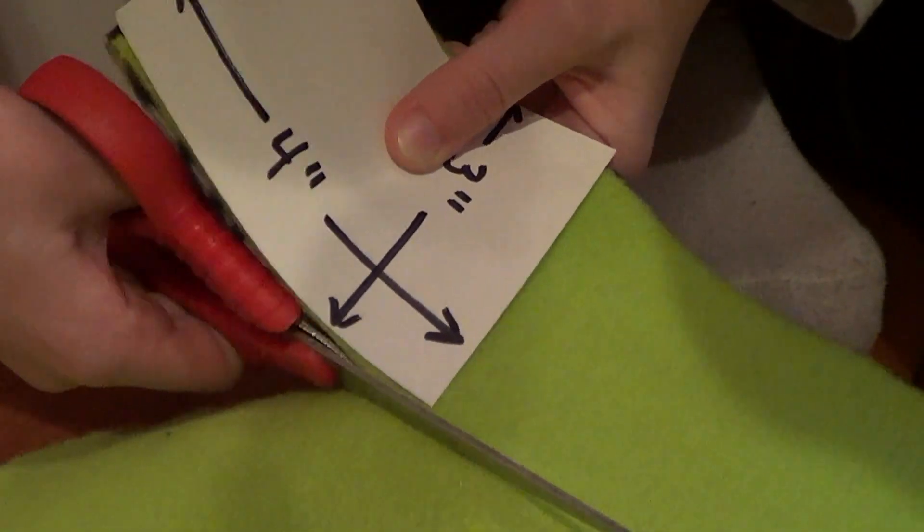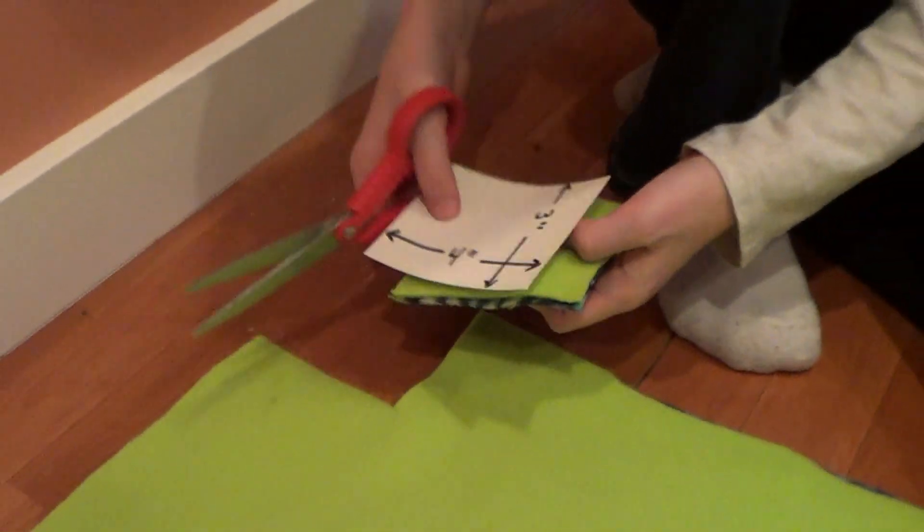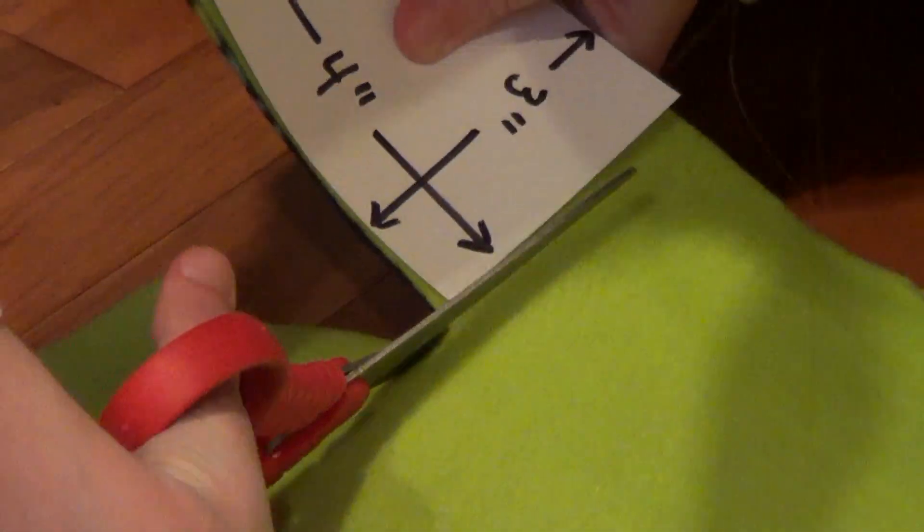Use the card to see how much of the corners to cut off. Make sure to put the card the same direction each time.